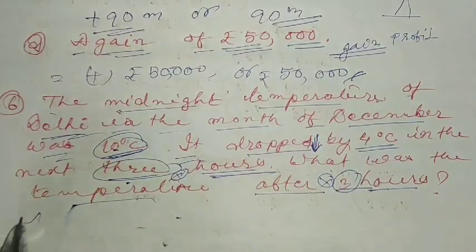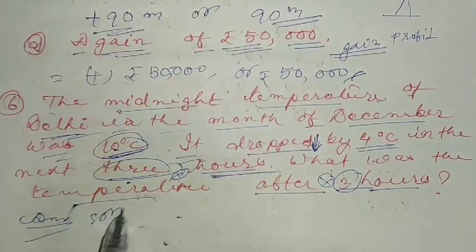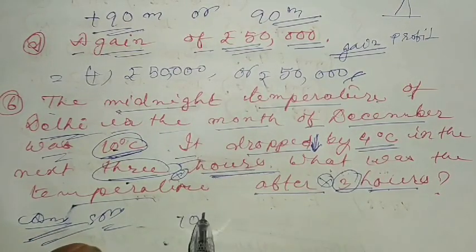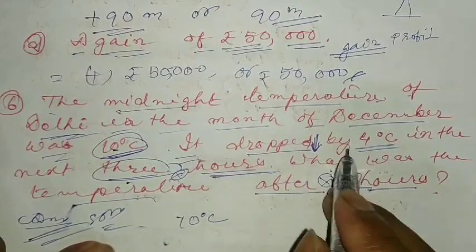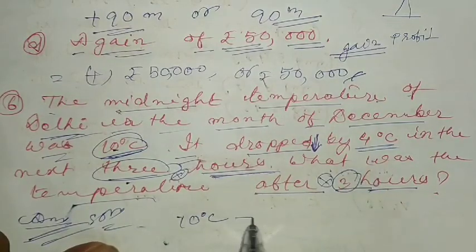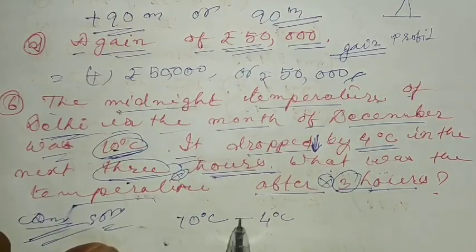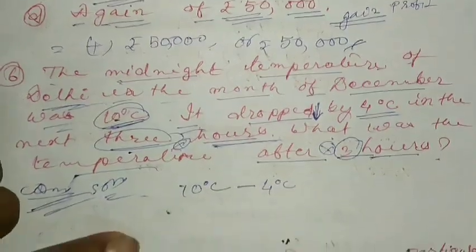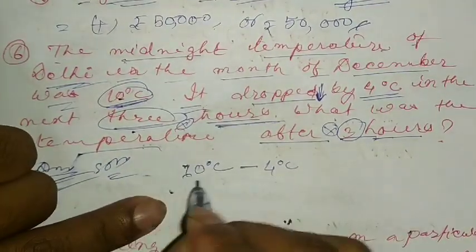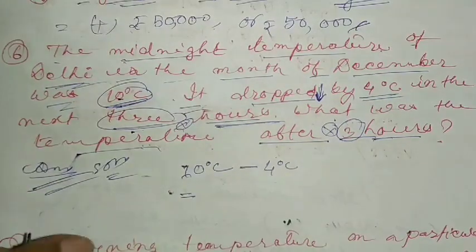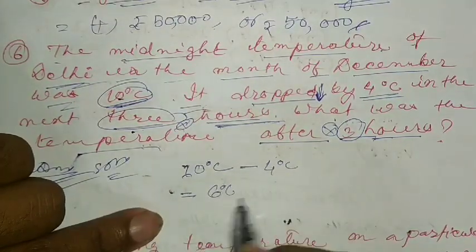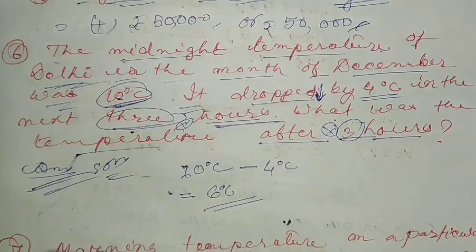The solution: the temperature at midnight is 10 degrees Celsius. After three hours it dropped by 4 degrees Celsius. Drop means minus, so minus 10 degrees Celsius minus 4 degrees gives us 6 degrees Celsius.